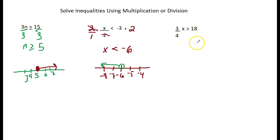Then for this next one, you notice I have a fraction times a variable. The way to get rid of the fraction is to multiply by its reciprocal. The reciprocal of 3 over 4 is 4 over 3.